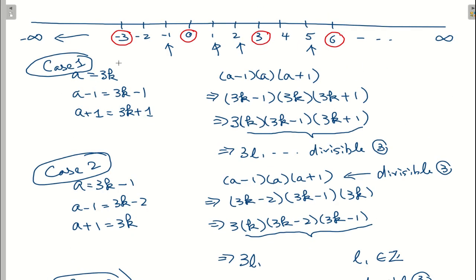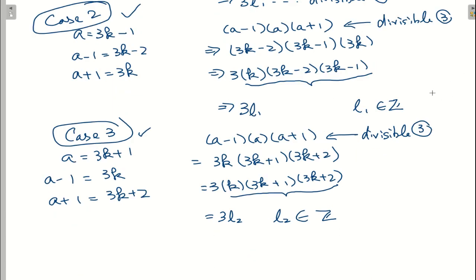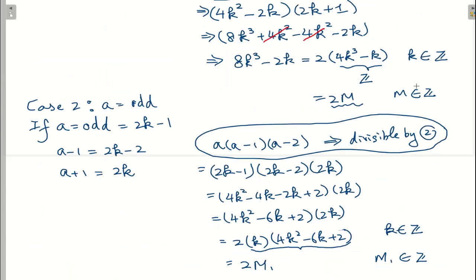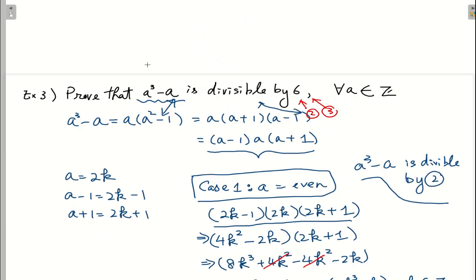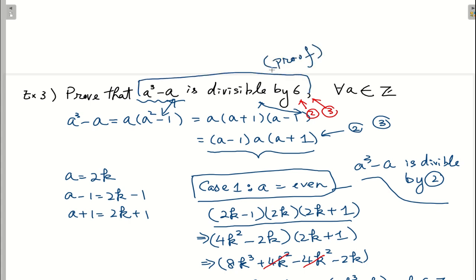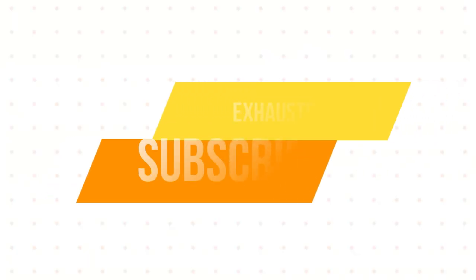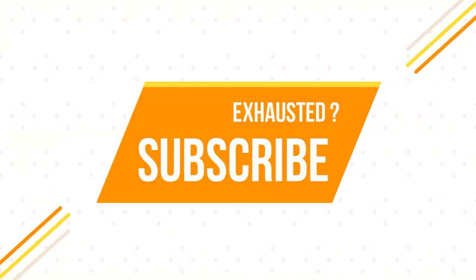For divisibility by 3 we checked all three cases and each is divisible by 3. For divisibility by 2 we checked both the even and odd cases and each is divisible by 2. Since a³ - a is divisible by both 2 and 3 for all integers a, it must be divisible by 6. This completes the proof by exhaustion. After these three examples you can see that proof by exhaustion is not very difficult. That's all for today — if you like my video please subscribe to my channel. Thank you, bye bye!